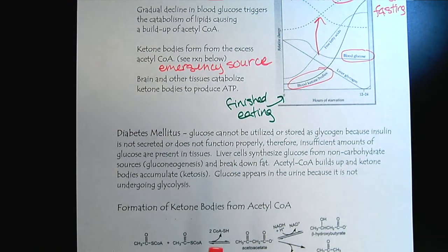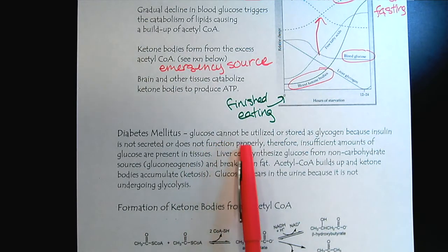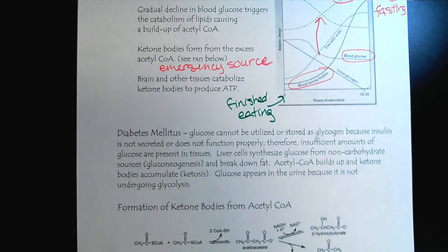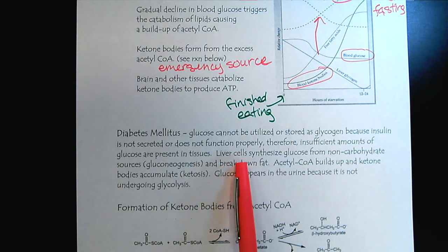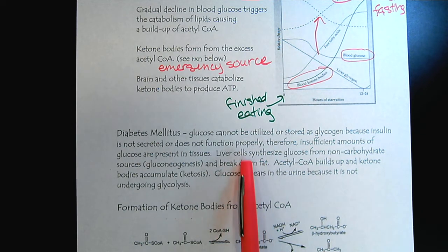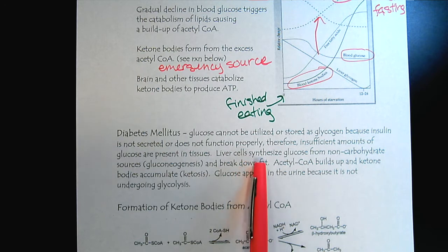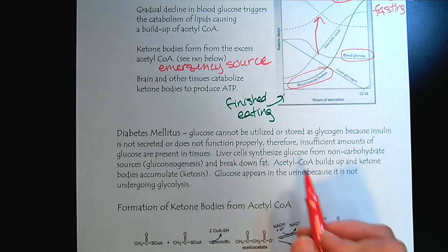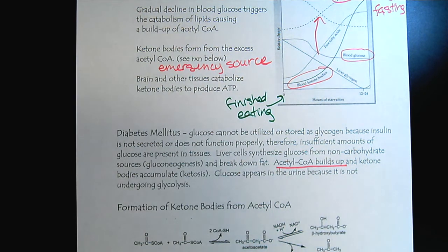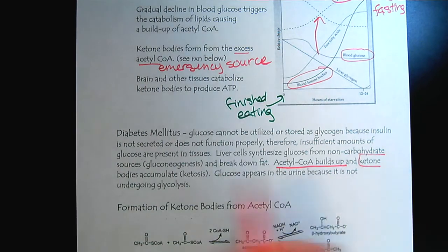People with diabetes mellitus have something going on biochemically that prevents glucose from being utilized or stored, related to insulin. A person with diabetes, in essence, is starving to death because the body cannot utilize glucose. It has to go into gluconeogenesis and starts breaking down fats. Whether we're fasting or have diabetes, we get a buildup of acetyl-CoA, which leads to the formation of ketone bodies.